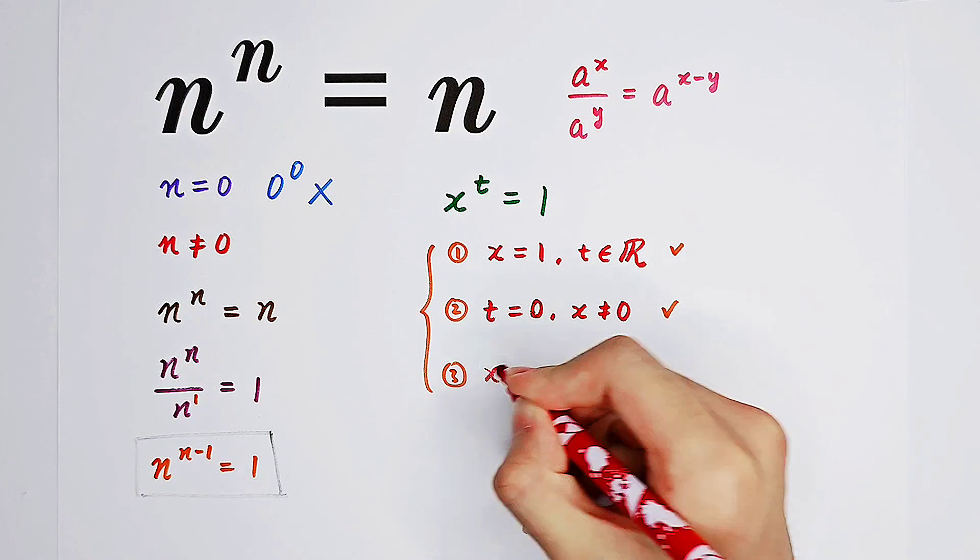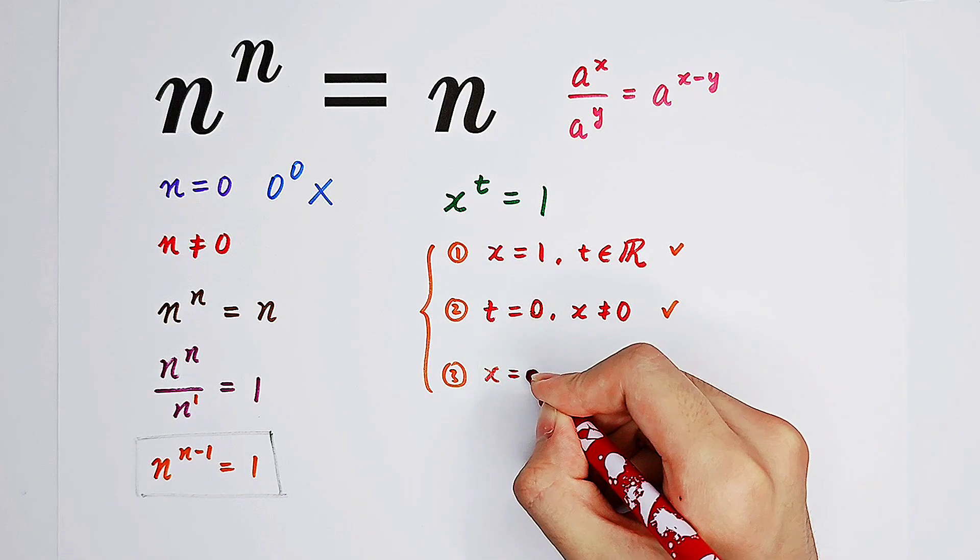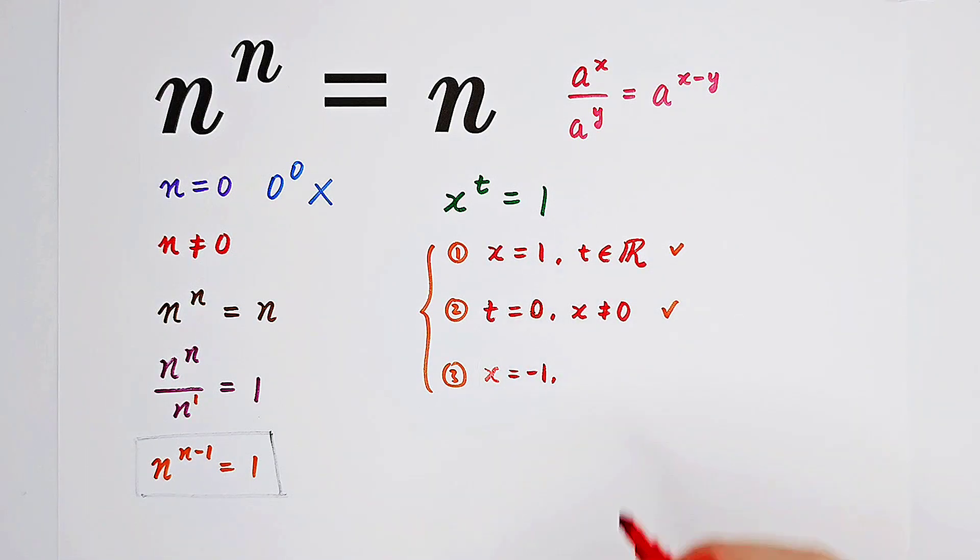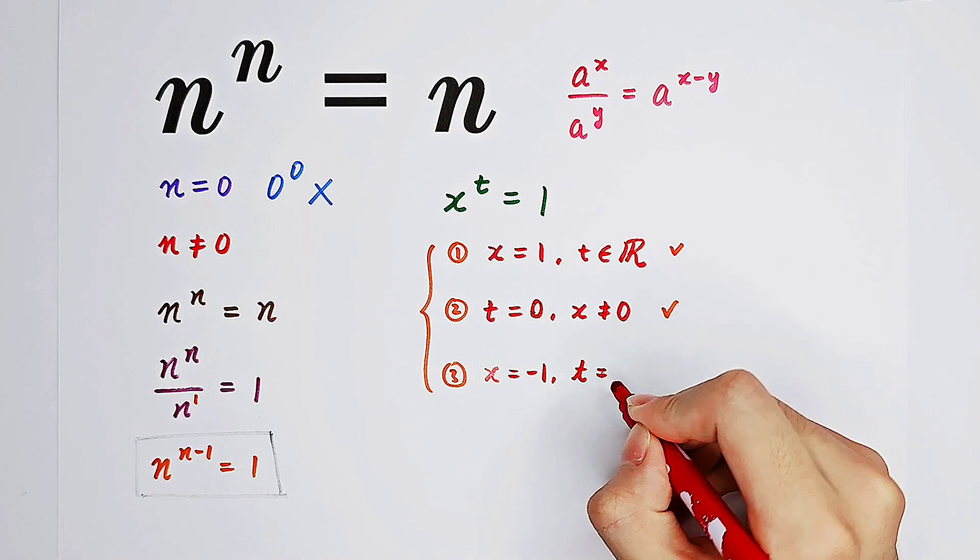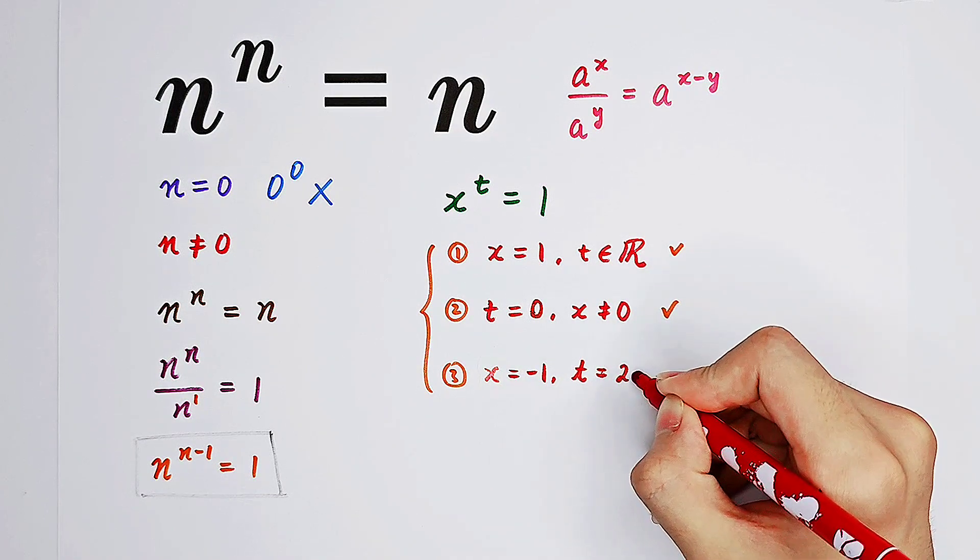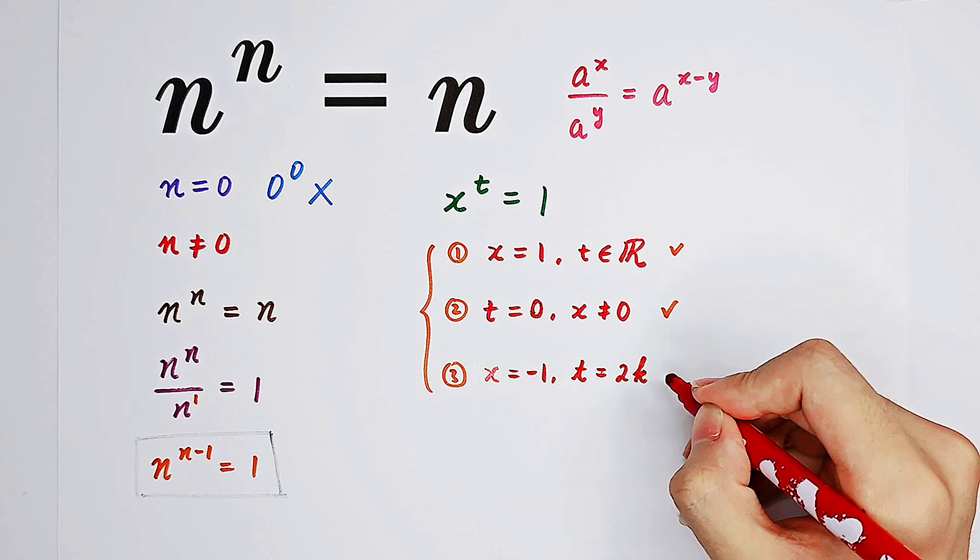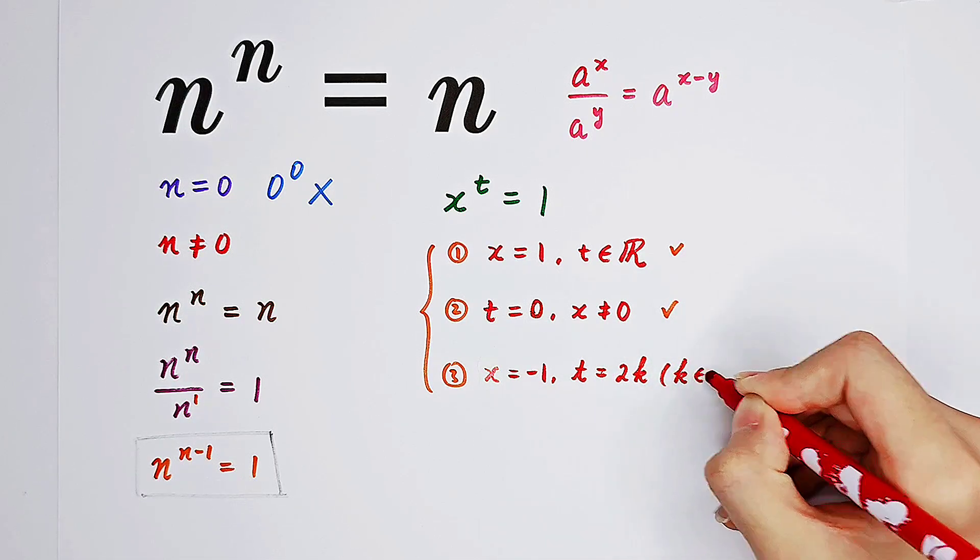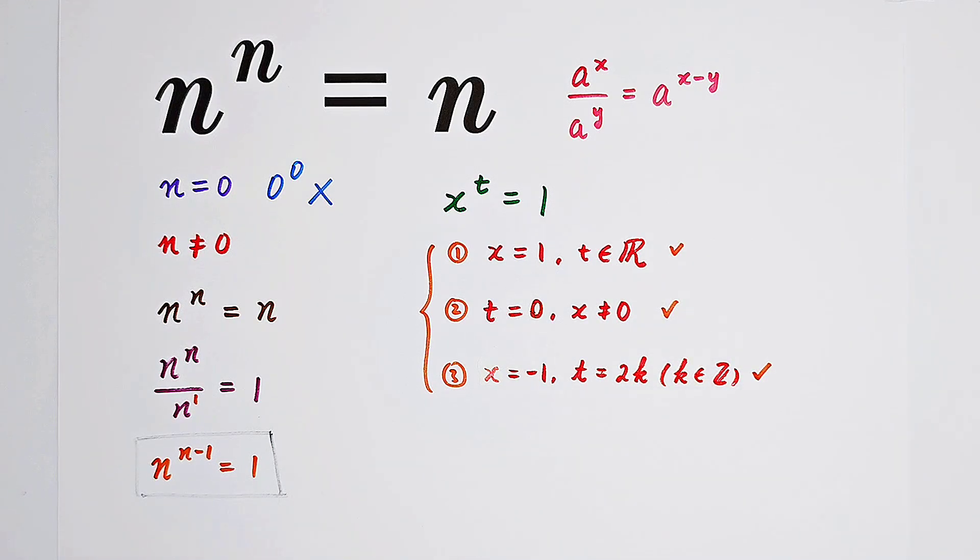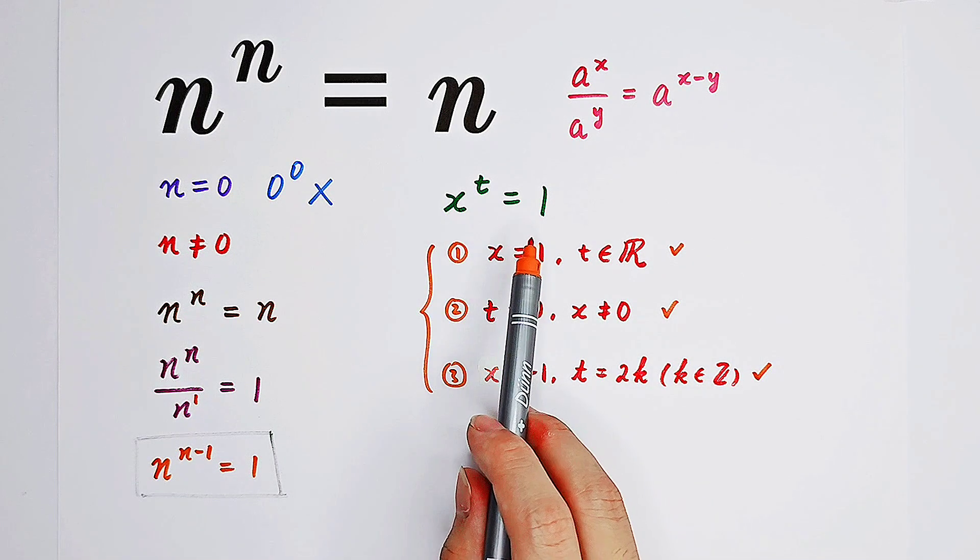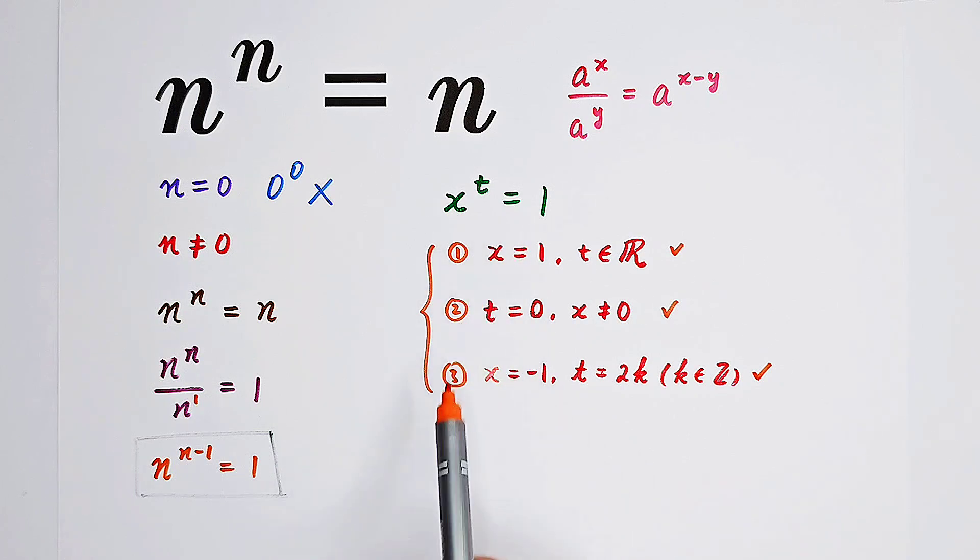If x is negative 1, then also if t equals 2 times k, that means it is an even number, where k is an integer. So for equations in this form, x to the power of t equals 1, there are three cases.